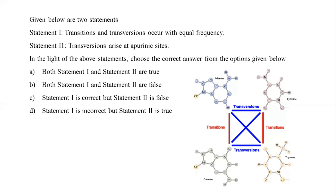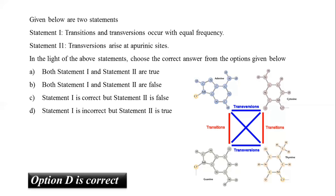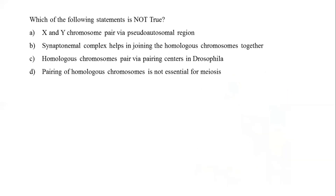Depurination occurs due to hydrolysis of the glycosidic linkage, resulting in an abasic (apurinic) site. Studies show that repair systems preferentially insert adenine at apurinic sites, resulting in GC-to-TA transversion — not transition. Therefore, statement 1 is incorrect but statement 2 is correct. The correct answer is option D.